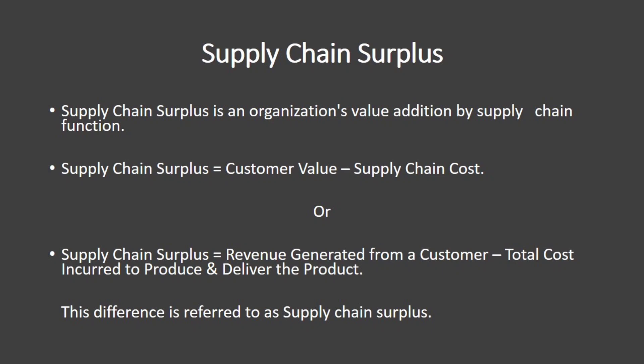We can say that supply chain surplus is equal to customer value minus supply chain cost, or supply chain surplus is equal to revenue generated from a customer minus total cost incurred to produce and deliver the product.